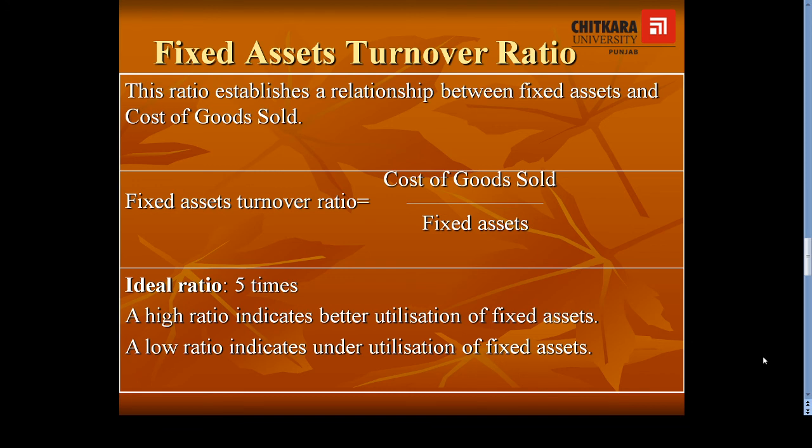Fixed assets will be taken from the balance sheet. Basically this ratio will tell us about the effective utilization of fixed assets. Higher the ratio shows better utilization of fixed assets, and lower the ratio indicates under-utilization of fixed assets. The ideal Fixed Assets Turnover Ratio is 5 times.